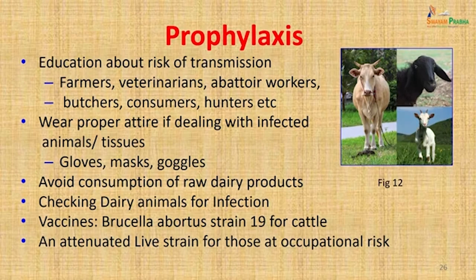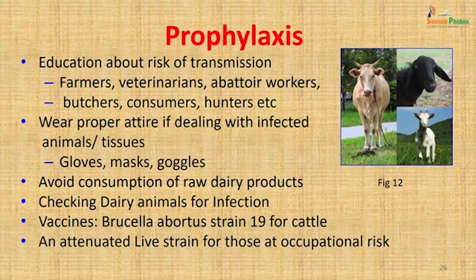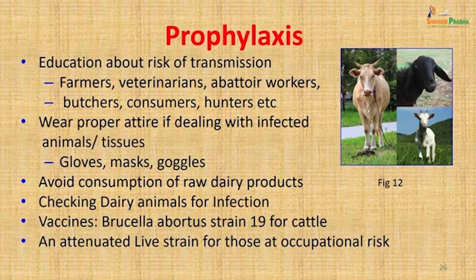To prevent brucellosis, education about transmission risk is essential — particularly for farmers, veterinarians, abattoir workers, butchers, hunters, and consumers of non-vegetarian food and milk. They must wear gloves, masks, and goggles when dealing with animals or their discharges. Raw dairy products should be avoided; dairy animals should be checked for infection. Vaccines should be given to animals — Brucella Rev 1 strain or strain 19 for cattle can be used. Attenuated live strain is available for those at occupational risk. Vertical transmission from mother to child and sexually transmitted brucellosis have also been documented — veterinarians' wives presenting with fever should be tested for Brucella antibodies.